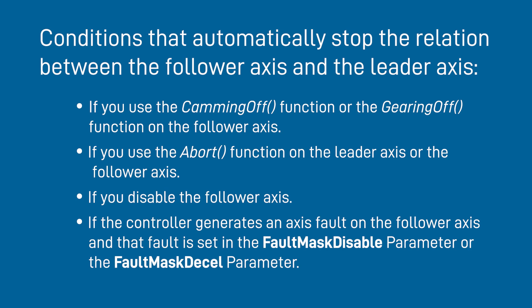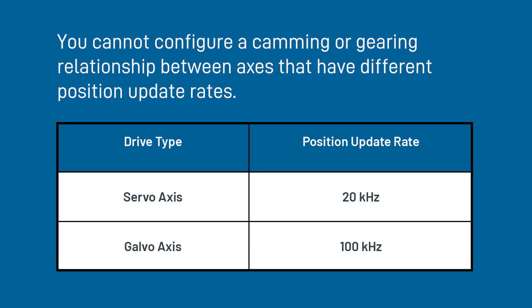Another piece of information is that you cannot configure camming and gearing between two axes that use differing position update rates. All servo axes use a 20kHz position update rate. This is standard on your Automation One drives such as an XC4 or iXC2E like we will use in our demonstration kits. All Galvo controllers, on the other hand, use a 100kHz update rate which, as of right now, is the only major contender when it comes to offering differing Automation One position update rates. Basically, as long as the leader and follower axes are both either servo axes or both Galvo axes, then you can link the two together.